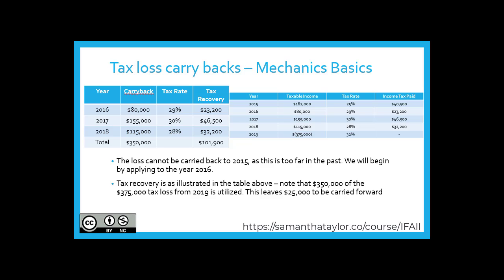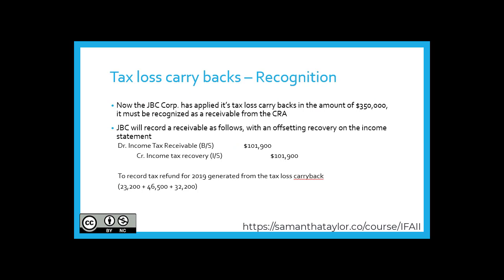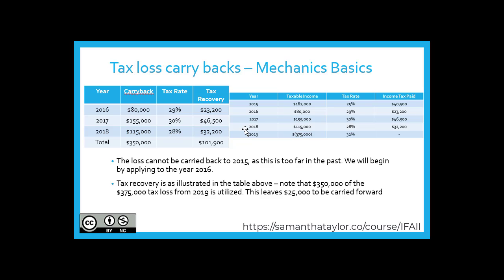What would that look like as a journal entry? We are going to carry back that tax loss to each of the previous three years, use it all up, and we would gain a tax refund — a tax benefit — of $101,900. We recognize the refund by debiting income tax receivable on the balance sheet and crediting the tax recovery for this year. The taxable loss was $375,000; we carried back and applied $350,000, which generated a tax refund of $101,900 from those three prior years.